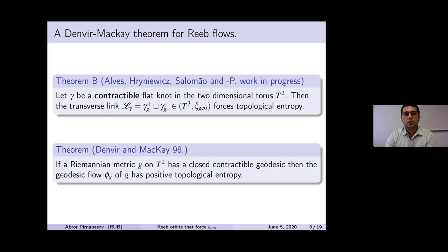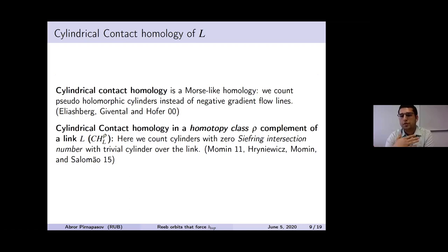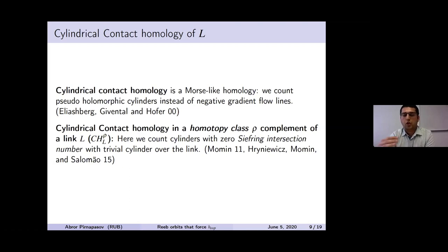This ends the main results section. Now we move to the technical part. We will use cylindrical contact homology in the complement of a link. Cylindrical contact homology is a Morse-type homology where we count pseudoholomorphic curves instead of negative gradient flow lines, and in our situation we do everything in the complement of the link.